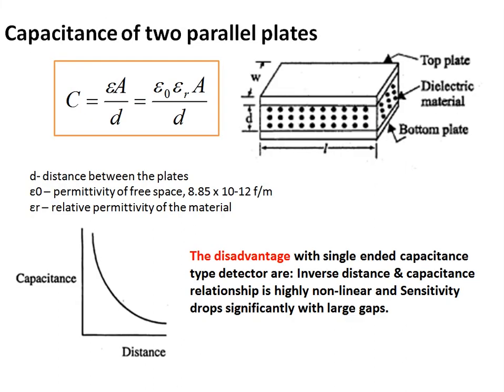The equation for the capacitance type differential pressure transmitter can be derived as follows. The capacitance of two parallel plates is given by epsilon × A / D, where epsilon-naught is the permittivity of free space and epsilon-r is the relative permittivity or dielectric constant of the material. A disadvantage of this two-plate arrangement is that the relationship between capacitance and plate distance is inverse, and sensitivity drops significantly with large gaps.